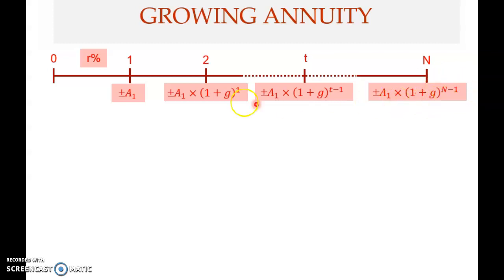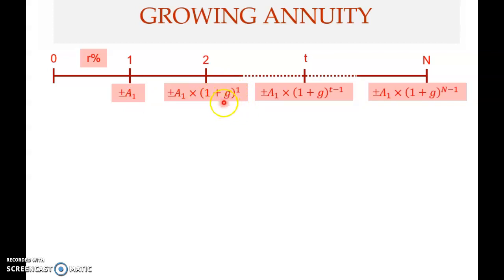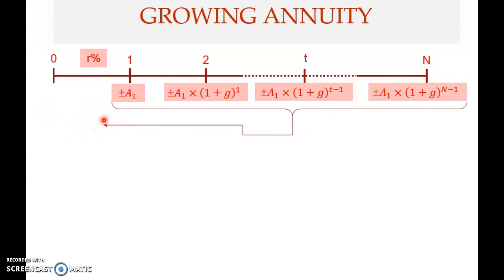The payment occurs at regular intervals but is not fixed — it grows at a fixed rate G. Because the growth rate is constant, we can summarize and find the present value of all these cash flows, which is the present value of the growing annuity, PVGA.